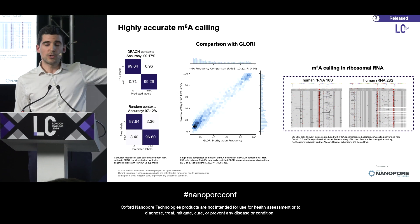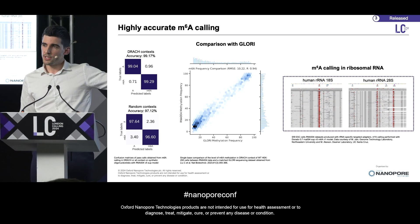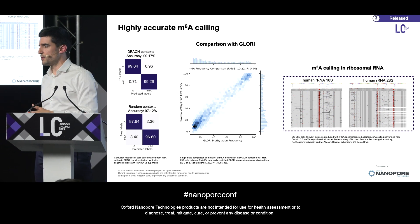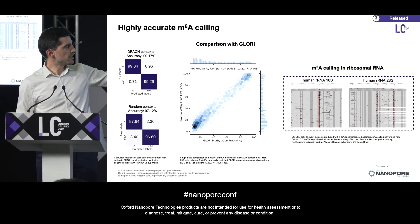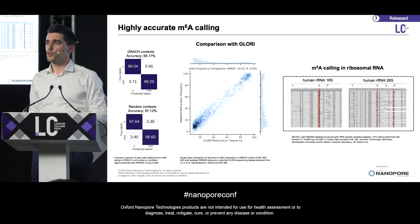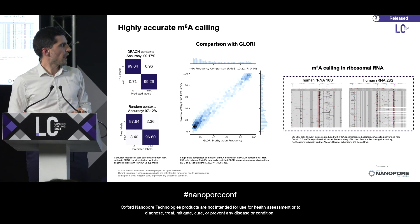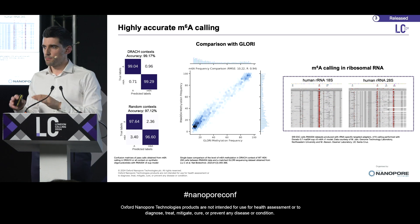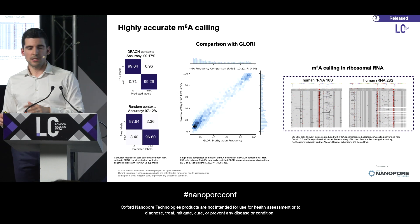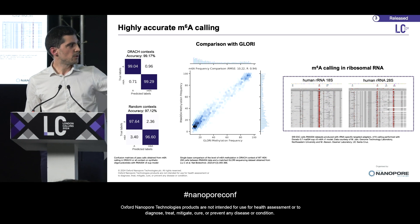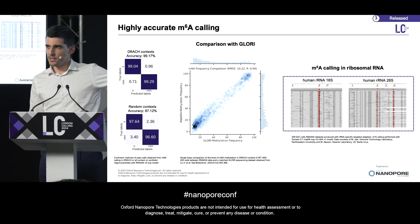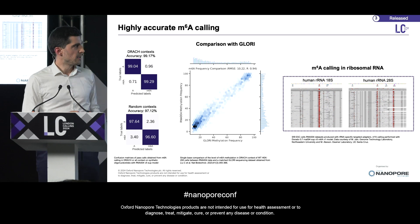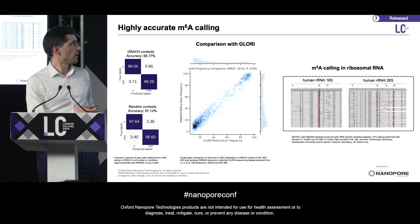We've done a comparison with GLORI. GLORI is the sort of equivalent to bisulfite sequencing for m6A, providing single-base resolution as well. We're extremely pleased to see a very good correlation between the two methods. We've also checked on ribosomal RNA, which has m6A in different contexts, and the modification probability piled up nicely on the known annotated m6A sites in ribosomal RNA — another really good result.